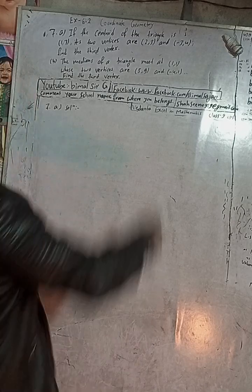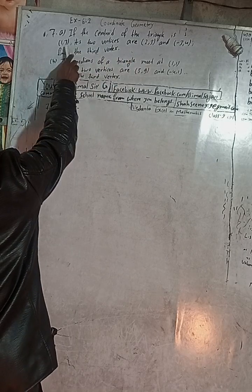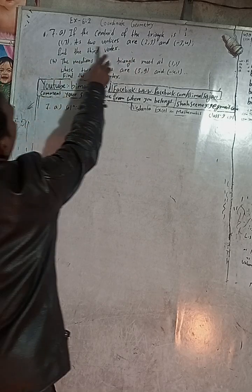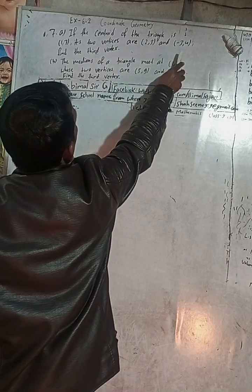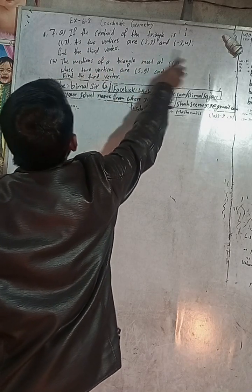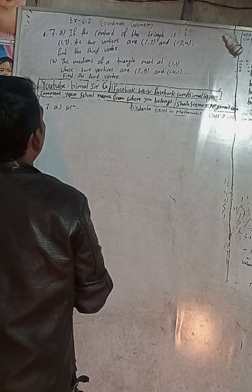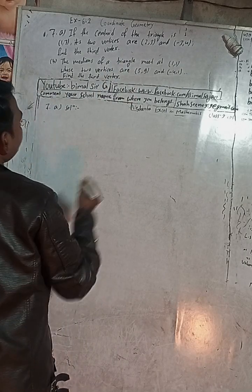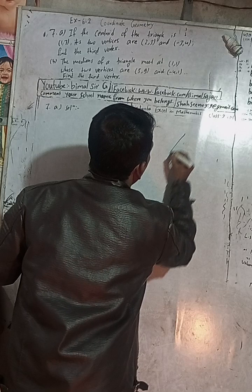Without wasting time, let's begin the solution. If the centroid of the triangle is (1, 3) and its two vertices are (2, 3) and (−3, 4), find the third vertex. So what does this mean? Suppose this is a triangle.